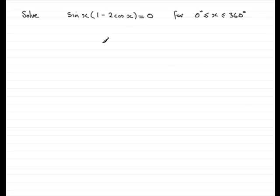So here we've got an example where I've got sin x all multiplied by 1 minus 2 cos x equals zero. And we've got to solve it for x between 0 degrees and 360 degrees.